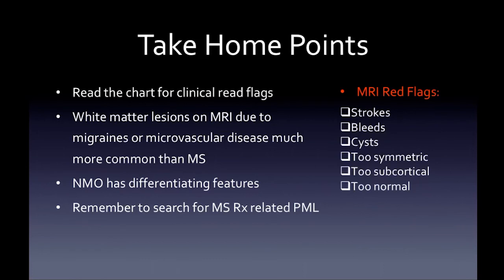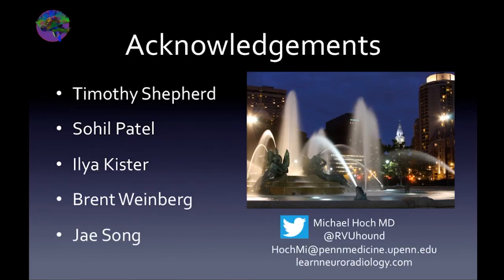Take-home points: read the chart for clinical red flags when reading the MRI. Look for strokes, bleeds, cysts — are the lesions too symmetric, too subcortical, or too normal-looking? White matter lesions from migraines and microvascular chronic small vessel ischemic disease are much more common than MS. NMO has differentiating features from MS — recognize them so NMO patients aren't placed on MS disease-modifying therapies that can exacerbate their symptoms. Search for treatment-related PML on SWI images: rapid development of new SWI signal change in an MS patient on treatment should raise the red flag for PML.